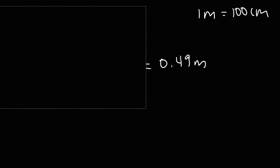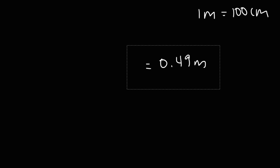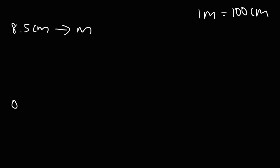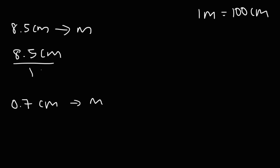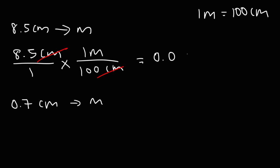Now for practice, let's try two more examples. Go ahead and convert 8.5 centimeters into meters and also 0.7 centimeters into meters. Let's write down what we're given and multiply by 1 meter divided by 100 centimeters. So it's going to be 8.5 divided by 100 — move the decimal two spaces to the left — giving us 0.085 meters.